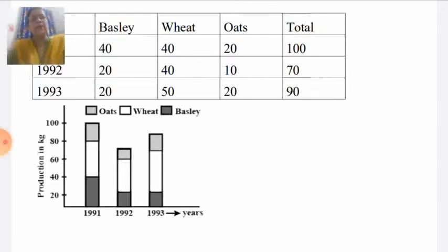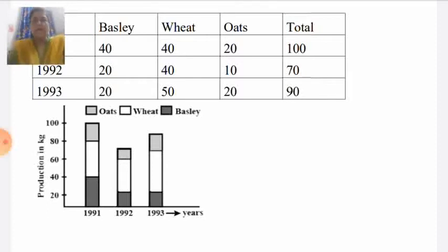Similarly, in 1992 and 1993, we make the bars and subdivide them into different parts or components. The subdivided bar diagram is very useful when we want to compare data. It also throws light on the integral parts of the data and the relation of the integral parts of the data.